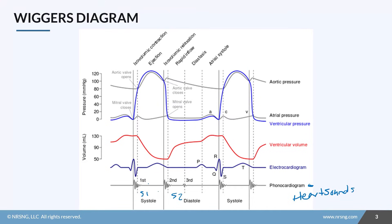We hear systole S1 — that's our lub. Then we hear diastole S2 — that's our dub. Then notice you have a bit of a pause; we call that the diastolic pause. So it's S1, S2, pause, repeating.